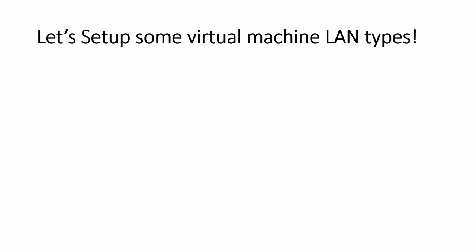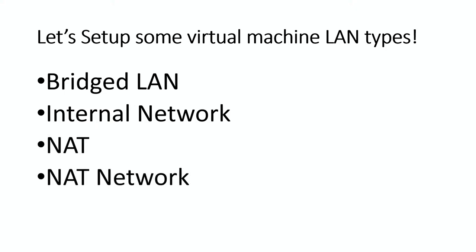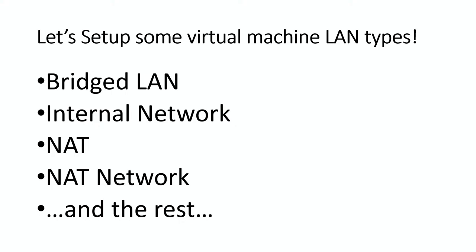The important thing we need to talk about at this point is virtual machine LAN types. We've had a discussion on it, but in this episode we're actually going to be setting them up and configuring them. We've got a bridged LAN, we've got internal networks, we've got NAT and a NAT network. What's the difference? I'll show you. And then what I call 'and the rest.' We're going to start setting these all up right now.